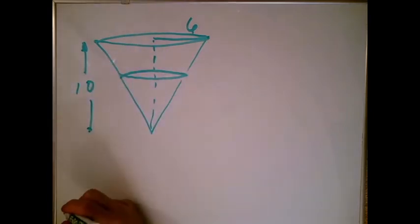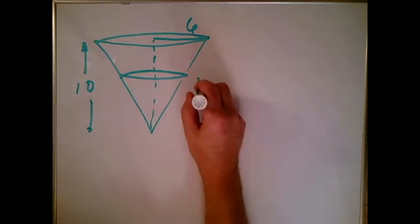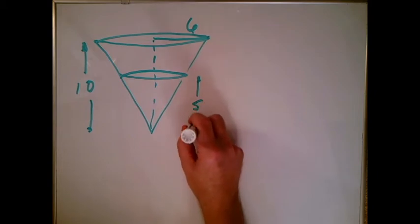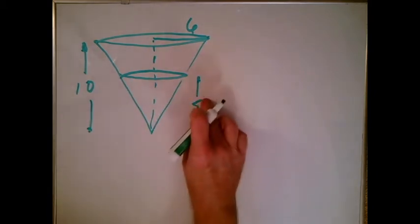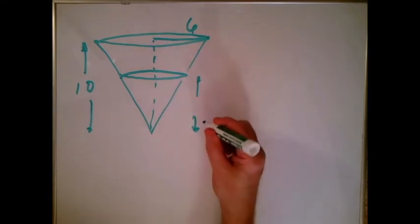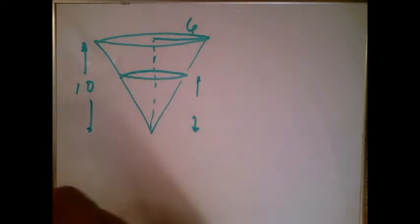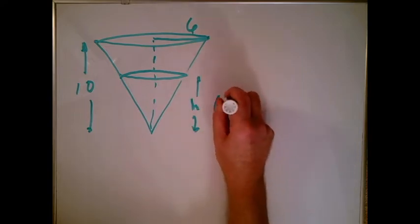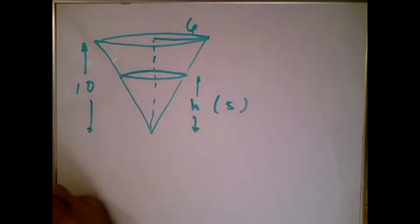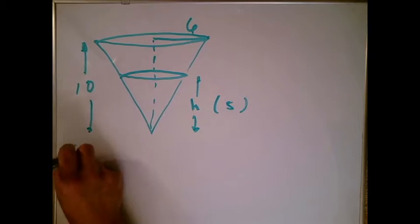They did ask me how fast is the water level rising when the water level is 5. I don't want to label this 5, because if I label that 5, that says the water level is never changing, so I'm not allowed to do that. So what I'm going to do is call this H, and I'm going to put a little 5 over here saying eventually I'm going to put in 5. Have we actually had enough to do this? Let's start writing stuff as a rate.